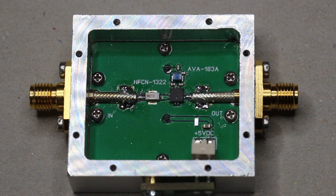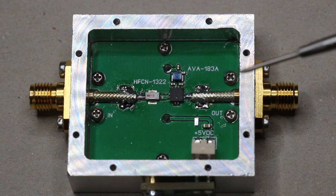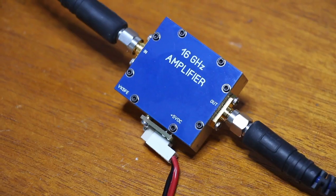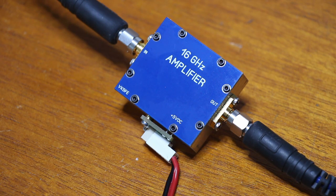The expected overall gain is 12 dB, not considering the losses in the cables and connectors, and the supply voltage is 5 volts. Let's now measure the response of the amplifier.